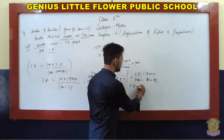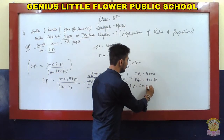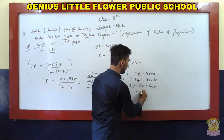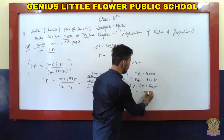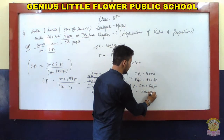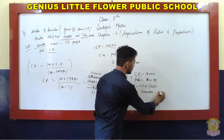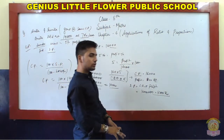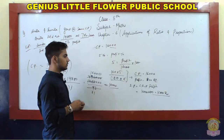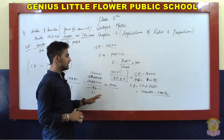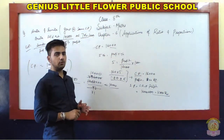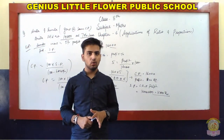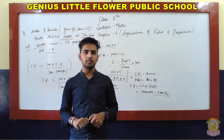Selling price equals cost price plus profit. So selling price equals 16,000 plus 800, giving 16,800 rupees. That is the exact selling price for Sunita's goat. These are the last questions of the exercise; the other questions you have to solve on your own. Thank you, stay safe, stay home.